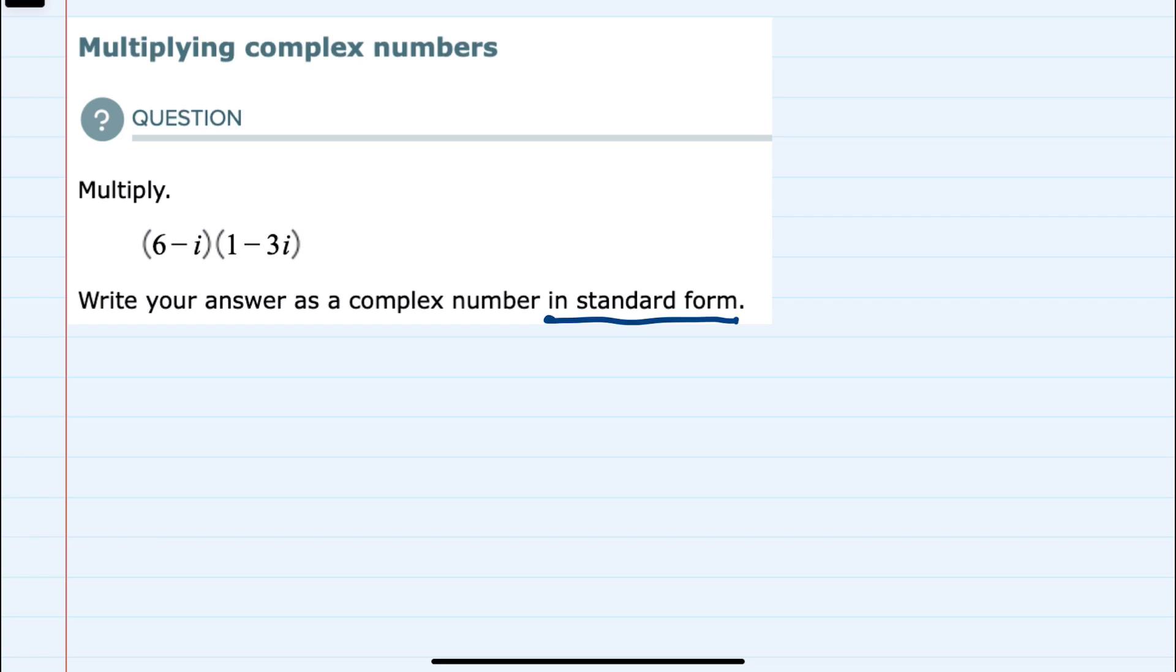The layout of this multiplication may look familiar, and you may have referred to this in the past as the FOIL method, which is just another way of remembering to distribute all of the multiplication. To show what that looks like, I'm going to start with the 6 in the first term and distribute that 6 to each part of the second number.